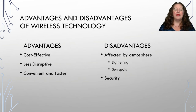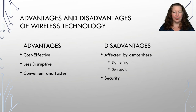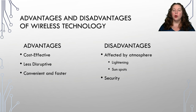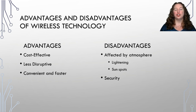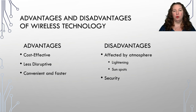Wireless has clear advantages: it's cost-effective, less disruptive to install, and much more convenient. However, the atmosphere can cause problems — lightning, sunspots, and storms can interfere, especially with satellites. The more important disadvantage is security: you're sending data wirelessly, so anyone able to receive that signal poses a security risk. Using wireless at home is probably safe, but using it at a public place like Starbucks carries a real security risk.